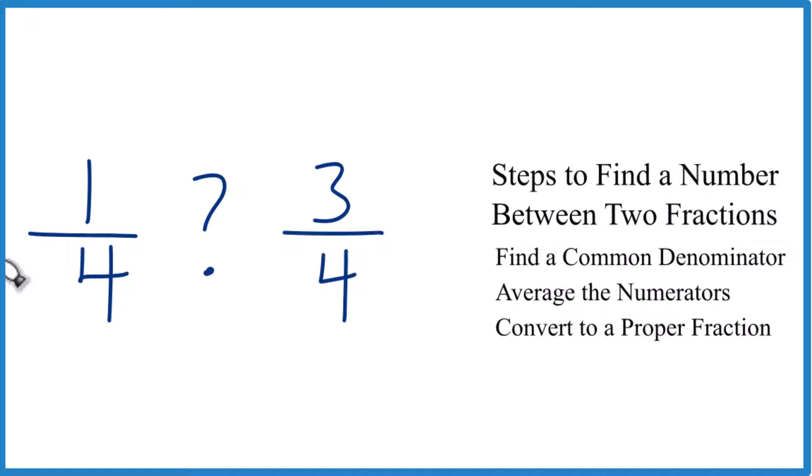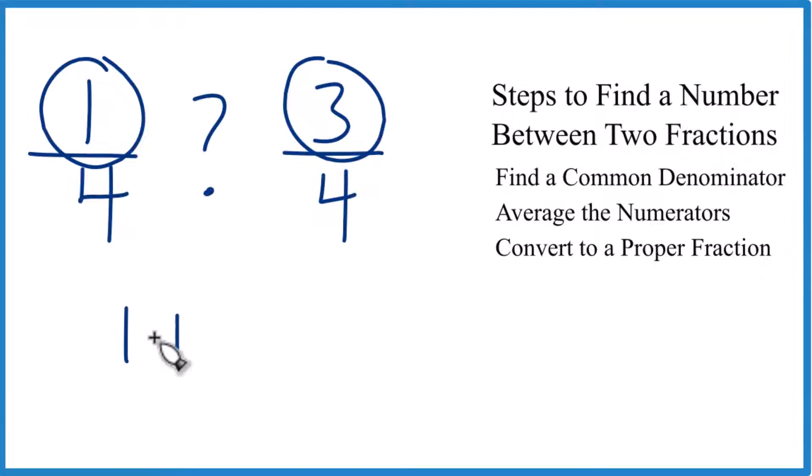We could probably reason this out, but let's go through and average the numerators so we can figure out what's going on here. So our numerators are 1 and 3. So let's average those: 1 plus 3, and then we have 2 numbers. So we add the numbers together and divide by 2 here since we have 2 numbers.